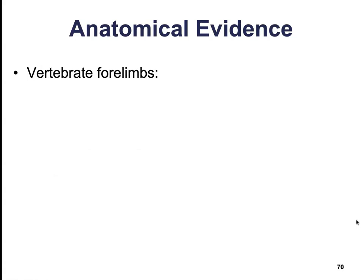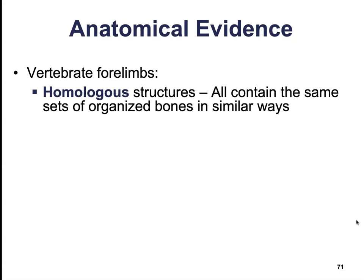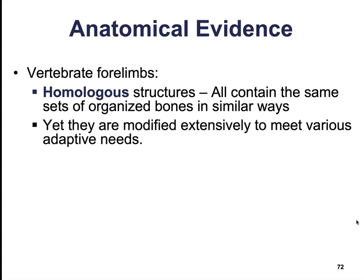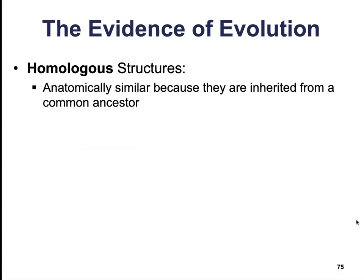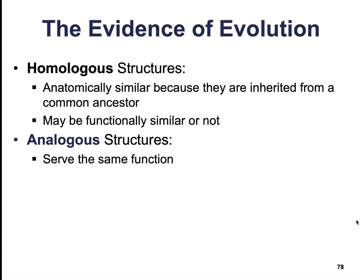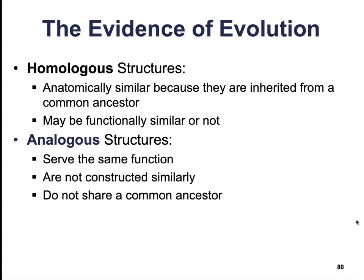There's also anatomical evidence. Vertebrate forelimbs are a great example of homologous structures, meaning they all contain the same set of bones organized in a similar way, yet modified extensively to meet various adaptive needs. Darwin interpreted this as support for the hypothesis of common descent. Homologous structures are anatomically similar because they are inherited from a common ancestor, but they are functionally very different. Analogous structures, on the other hand, serve the same function but are anatomically very different — they're not constructed similarly, and thus probably do not share a common ancestor. Homologous structures likely started with a common ancestor and then diversified throughout the generations based on what each particular environment needed.